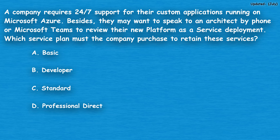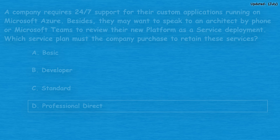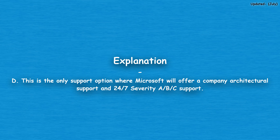The correct answer is option D, professional direct. This is the only support option where Microsoft will offer a company architectural support and 24/7 severity ABC support.